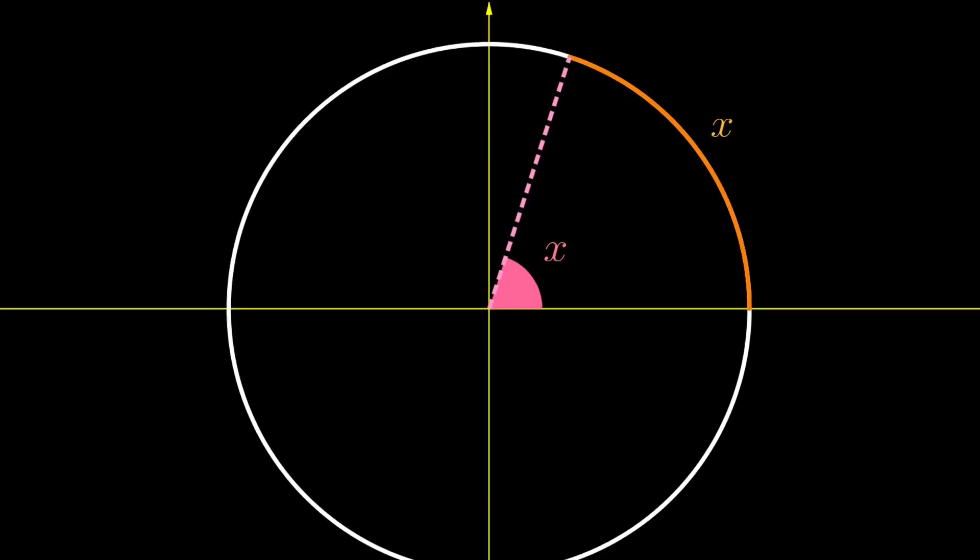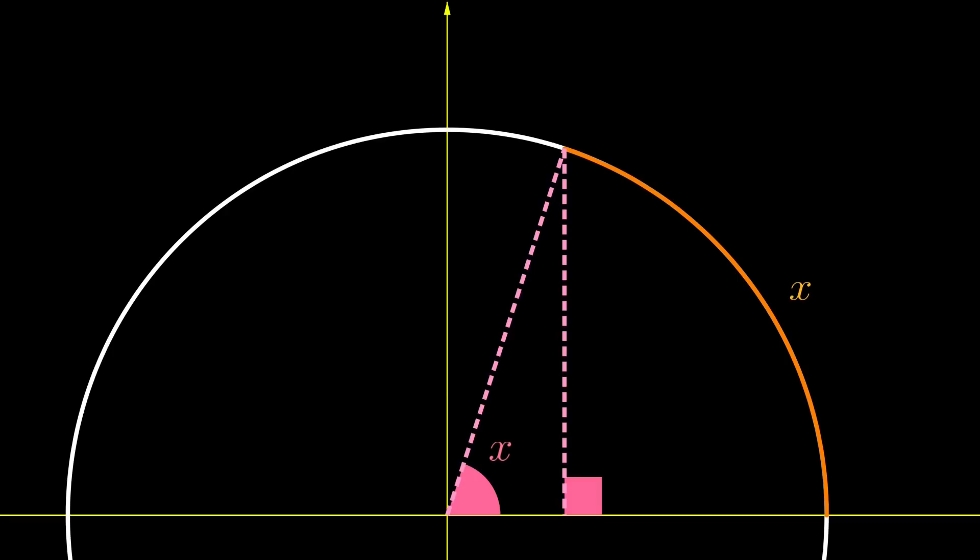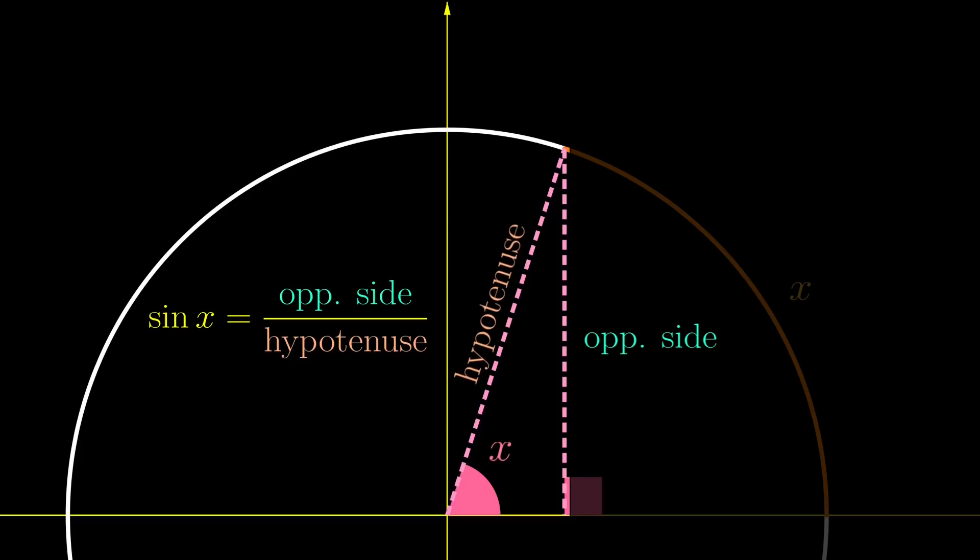There is just one more thing to set up before the power series. What is sine x? Well, we drop a perpendicular, and a right-angled triangle appears. Sine x is the ratio of the opposite side to the hypotenuse, and in this case, the opposite side is the vertical segment, while the hypotenuse is a radius, so it has length 1.